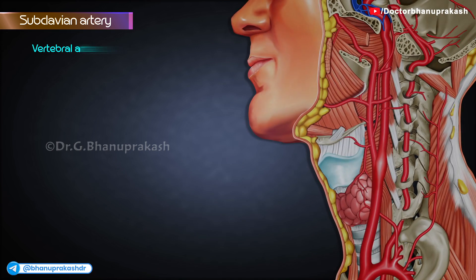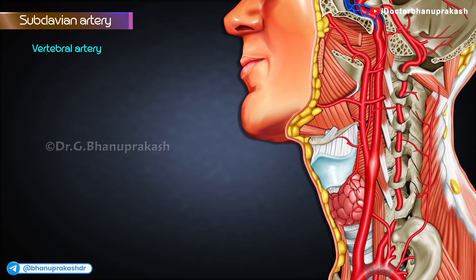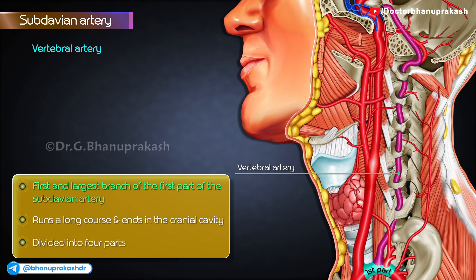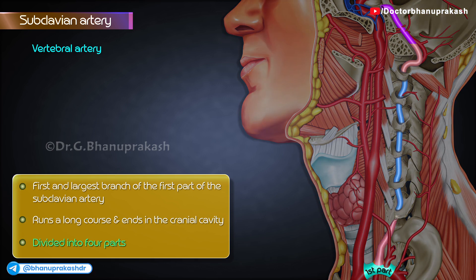Vertebral artery. The vertebral artery is the first and largest branch of the first part of the subclavian artery. It runs a long course and ends in the cranial cavity by supplying the brain. It is divided into four parts.